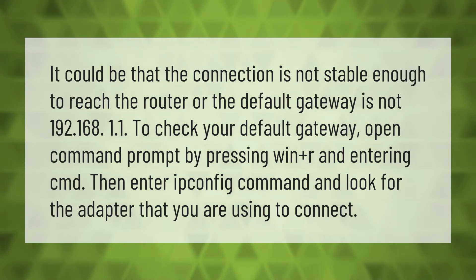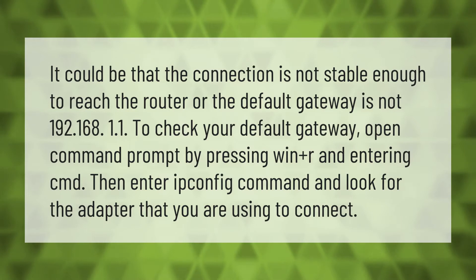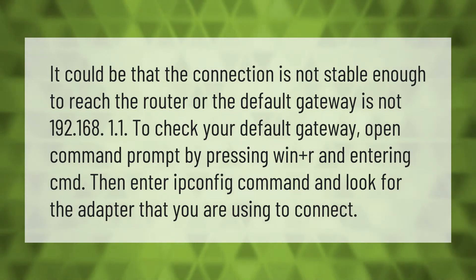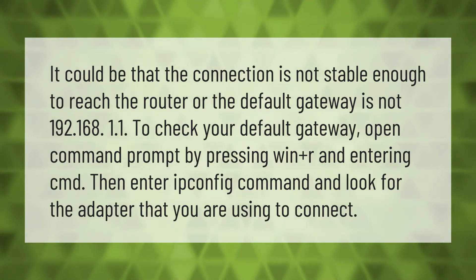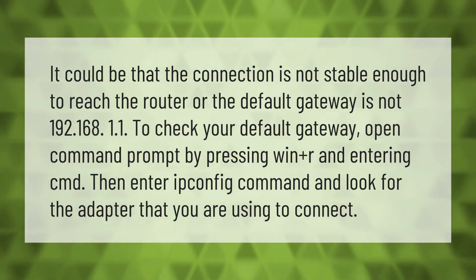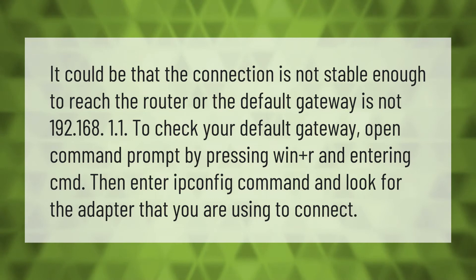It could be that the connection is not stable enough to reach the router, or the default gateway is not 192.168.1.1. To check your default gateway, open Command Prompt by pressing Win + R and entering cmd, then enter the ipconfig command and look for the adapter that you are using to connect.